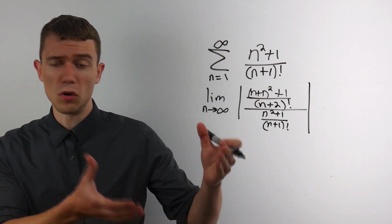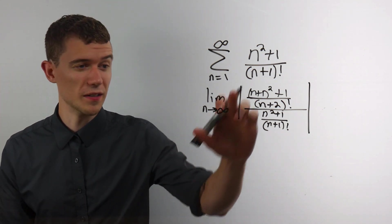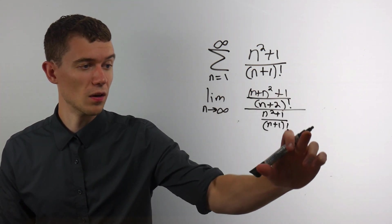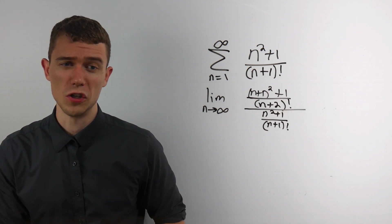Well, everything in here is already positive, so the absolute value sign is kind of redundant. I don't really need it anymore. But some problems you might need that. Just know it's there for the ratio test.